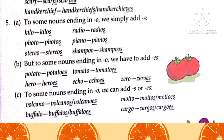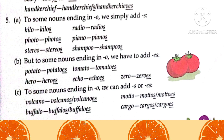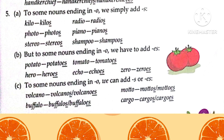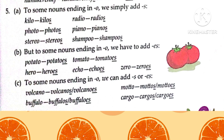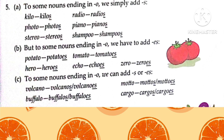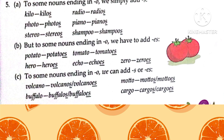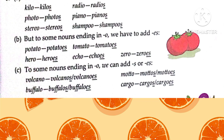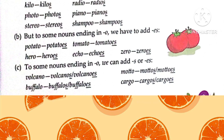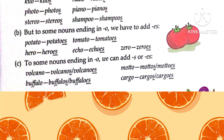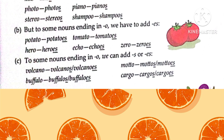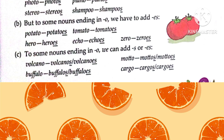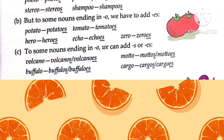Note that 'potato' appeared in both parts — it can take either S or ES. Part C: for some nouns ending in O, we can add either S or ES. Examples: volcano → volcanoes or volcanos, buffalo → buffalos or buffaloes, cargo → cargos or cargoes. Potato can also be included here, as both plural forms are correct.